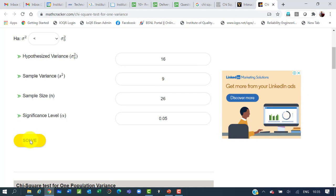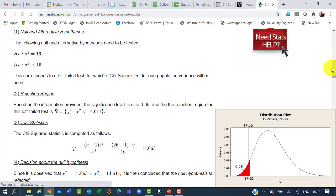And we just asked this calculator to solve. So, click on the solve. Okay. So, it has solved our problem and it has stated H₀: σ² = 16. Hₐ: σ² < 16.